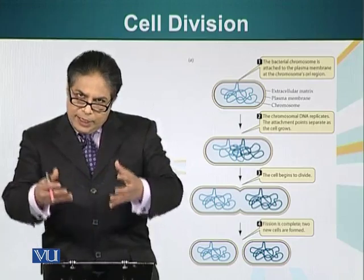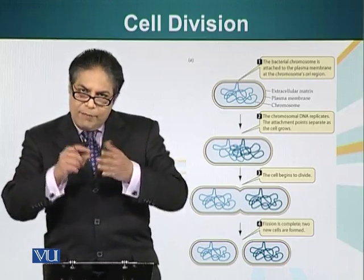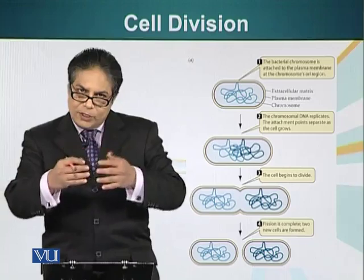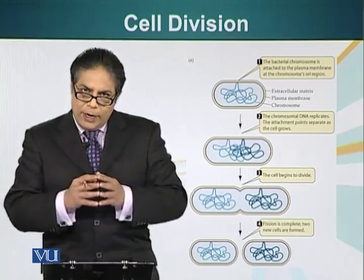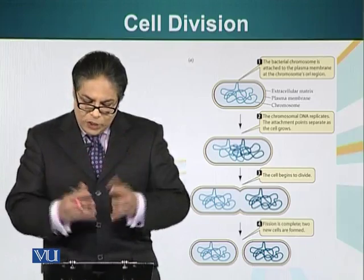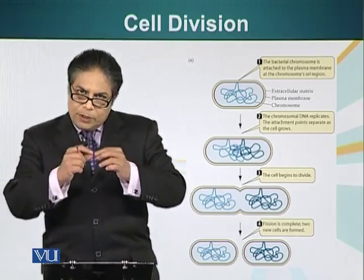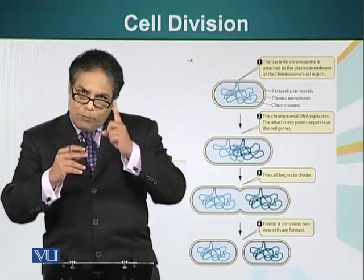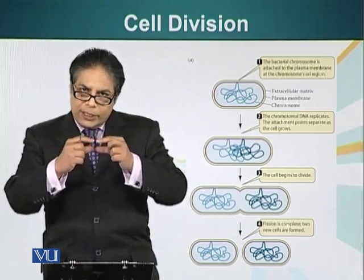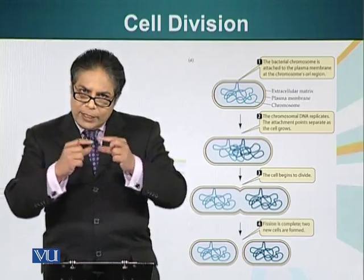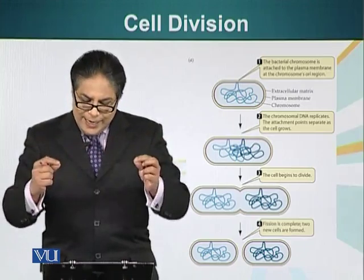When a bacteria has to divide and conditions are favorable, the DNA will start replicating — it will start making a copy of itself at the ori point, the point of origin of replication. And as the cell grows and stretches, initially we had only one ori, now we have two oris. As the cell elongates, the two oris will also separate and segregate.